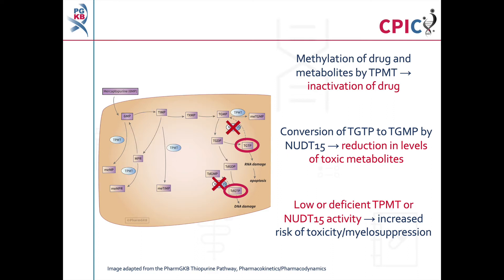If a patient has low or deficient NUDT15 activity, the levels of active thioguanine nucleotide metabolites are increased. This puts the patient at an increased risk of developing myelosuppression.